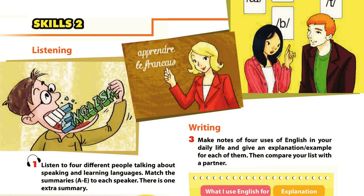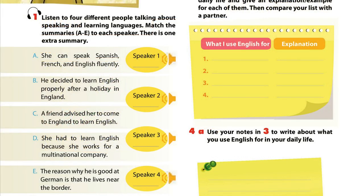Unit 9, Page 39. Skills 2. Listening. Activity 1: Listen to four different people talking about speaking and learning languages. Match the summaries to each speaker. There is one extra summary. My first language is French, but I live near the border, so I'm reasonably good at German. I can also get by in Italian. We went to Rome last summer, and I picked up the basics.